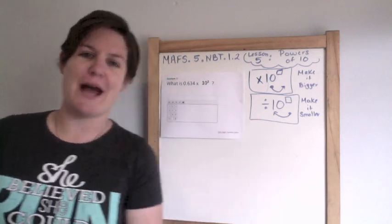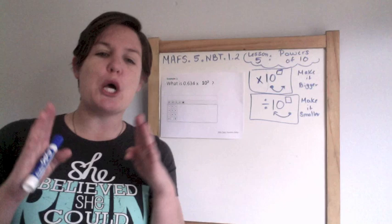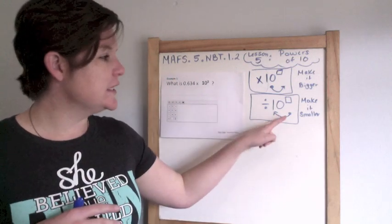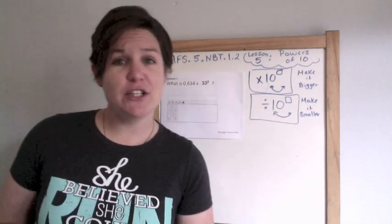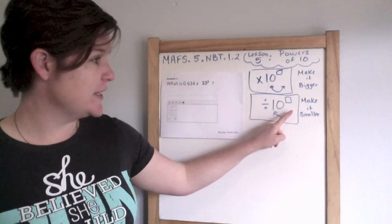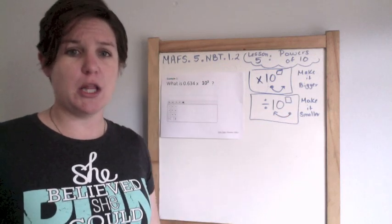When you are dividing by a power of 10, you're making it smaller. To the left, to the left, everything you own in your box to the left, you're making something smaller.